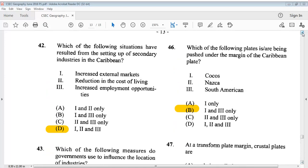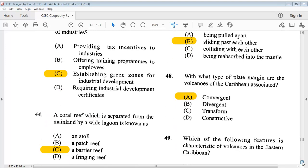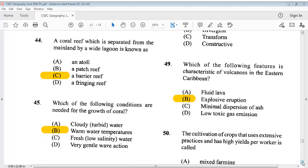Question 46 says, which of the following plates is or are being pushed under the margin of the Caribbean plate? 1, Cocos. 2, Nazca. 3, South American. The answer is B, 1 and 3 only. Question 47: At a transform plate margin, crustal plates are? The answer is B, sliding past each other. Question 48: With what type of plate margin are the volcanoes of the Caribbean associated? The answer is A, convergent. Question 49: Which of the following features is characteristic of volcanoes in the Eastern Caribbean? The answer is B, explosive eruption.